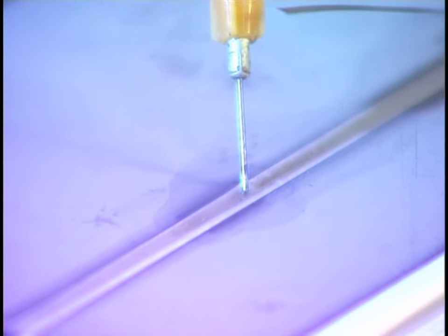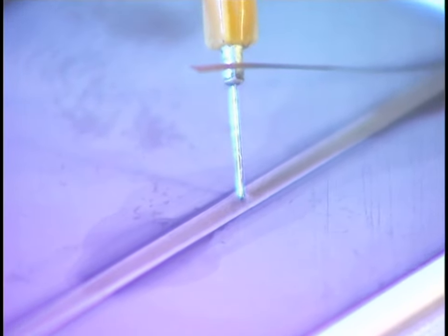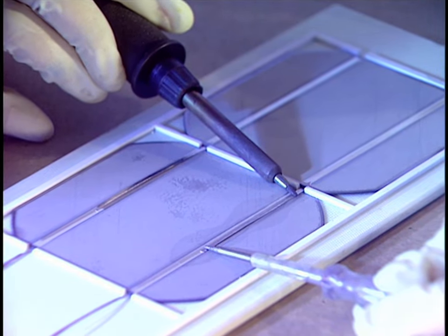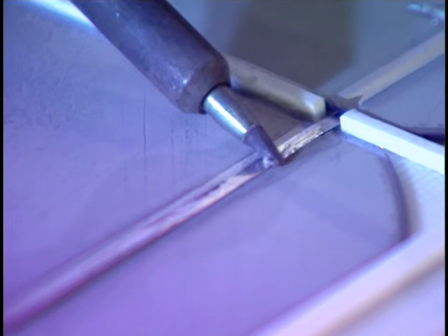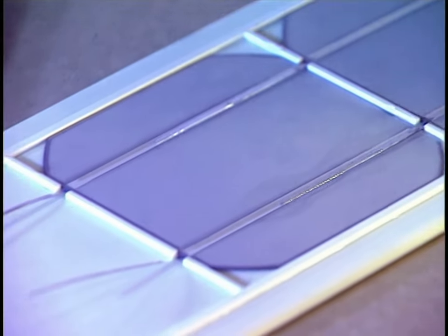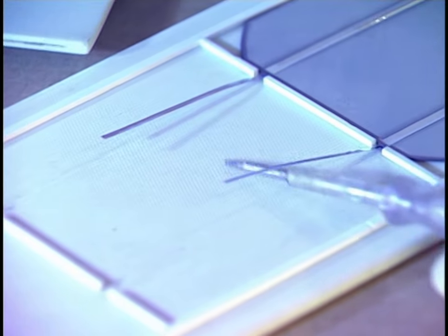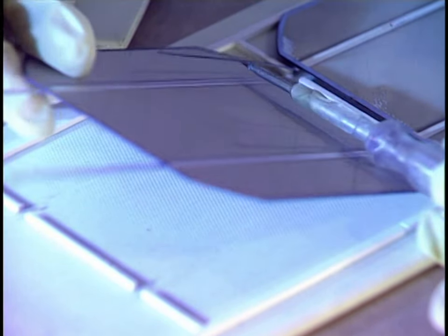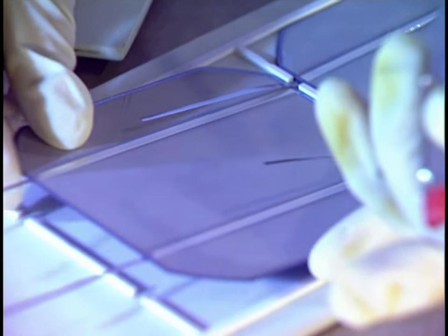Now they can proceed with soldering the modules by groups. First a flux is applied which improves the quality of the soldering. With great dexterity, they assemble four groups composed of nine modules each. In this way, 36 modules are soldered and connected in series.